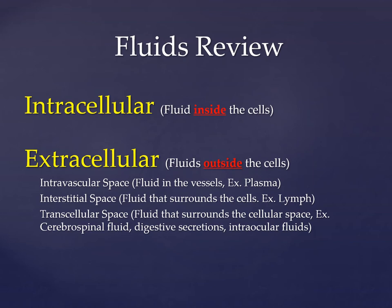Most of our fluid is found inside our cells, primarily in our skeletal muscle cells. One-third of our fluid is found outside our cells in the intravascular spaces, interstitial spaces, and transcellular spaces. Our intravascular space — fluid inside the vessels, like plasma — makes up about six liters of our blood volume: three liters is plasma and three liters is erythrocytes, leukocytes, and thrombocytes — all of our blood cells.